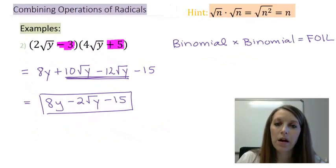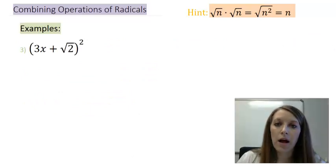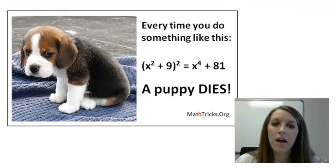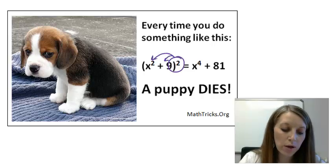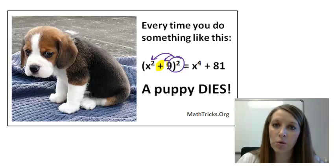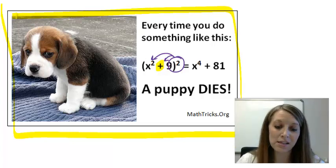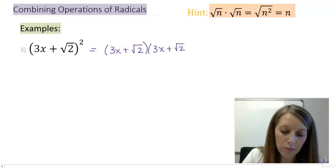The last example is (3x + √2) squared. I have complete faith you can do this — pause the video and try. Let me first go over what NOT to do: you absolutely cannot distribute the square when the inside operation is addition or subtraction. Remember, every time you do that you're killing a puppy. So the correct way is to write out what 'squared' actually means — write it out twice and multiply.